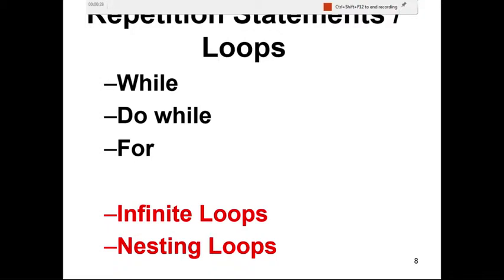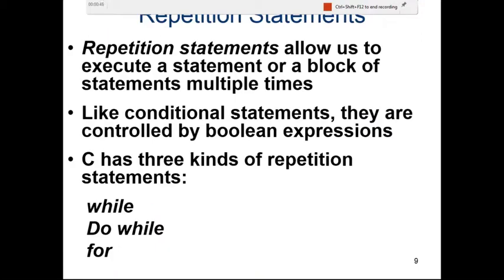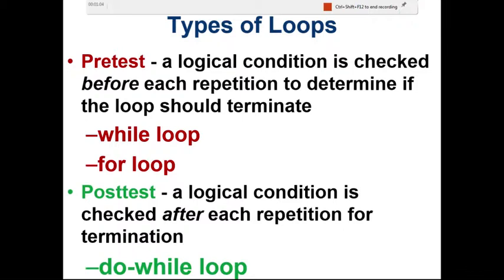We cover the while, do-while, and for loops, including infinite loops and nesting loops. There are three main types of loops: while, do-while, and for. Repetition statements allow us to execute a statement or a block of statements multiple times. Like conditional statements, they are controlled by boolean expressions.